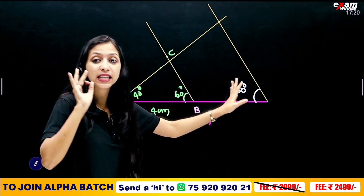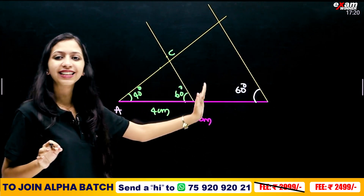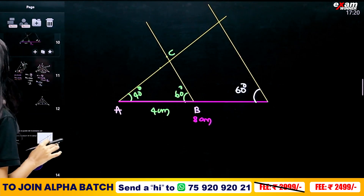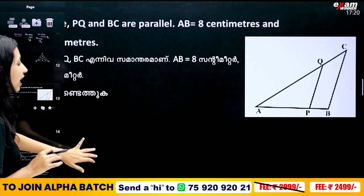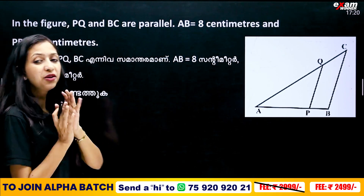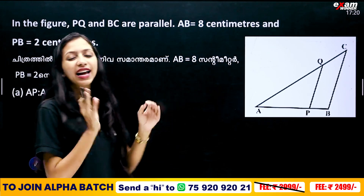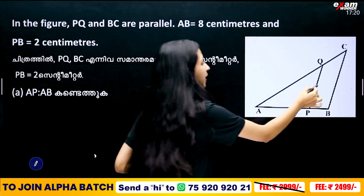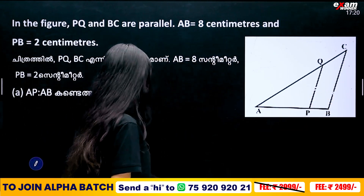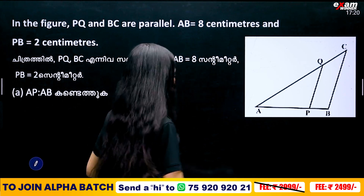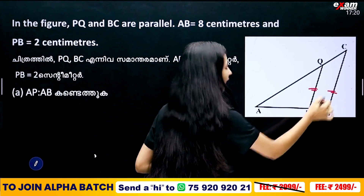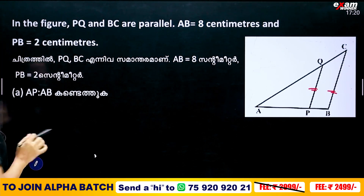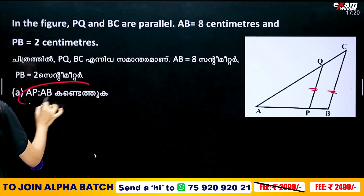The two triangles are similar. This is important to know about all these triangles. PQ is parallel to BC. If you have AB and PB, then AP is to AB.